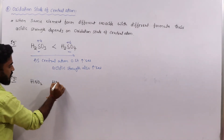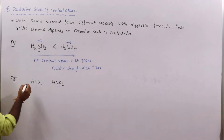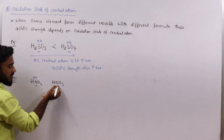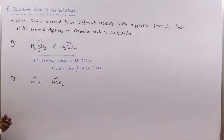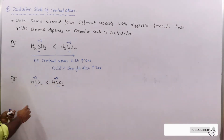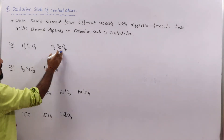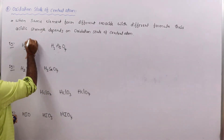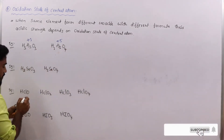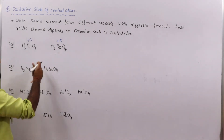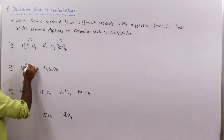Next example: HNO2 and HNO3, where the central atom is nitrogen in both cases. The oxidation state of nitrogen is +3 in HNO2 and +5 in HNO3. Since the oxidation state increases, acidic strength increases, so HNO3 is more acidic than HNO2. Similarly, for H3AsO3 and H3AsO4, the oxidation state of arsenic is +3 and +5 respectively, so H3AsO4 is more acidic.